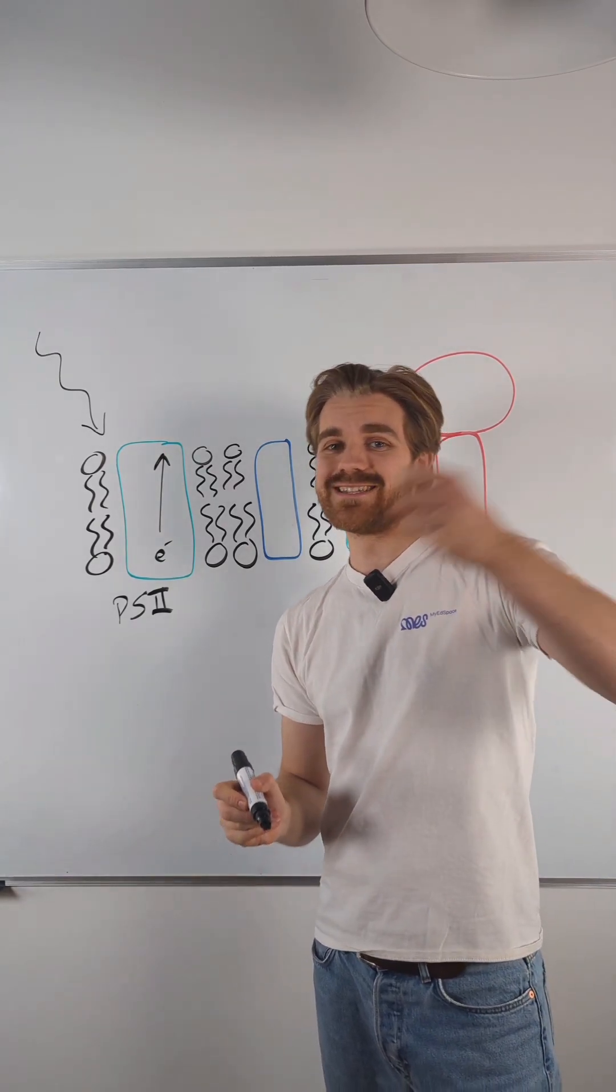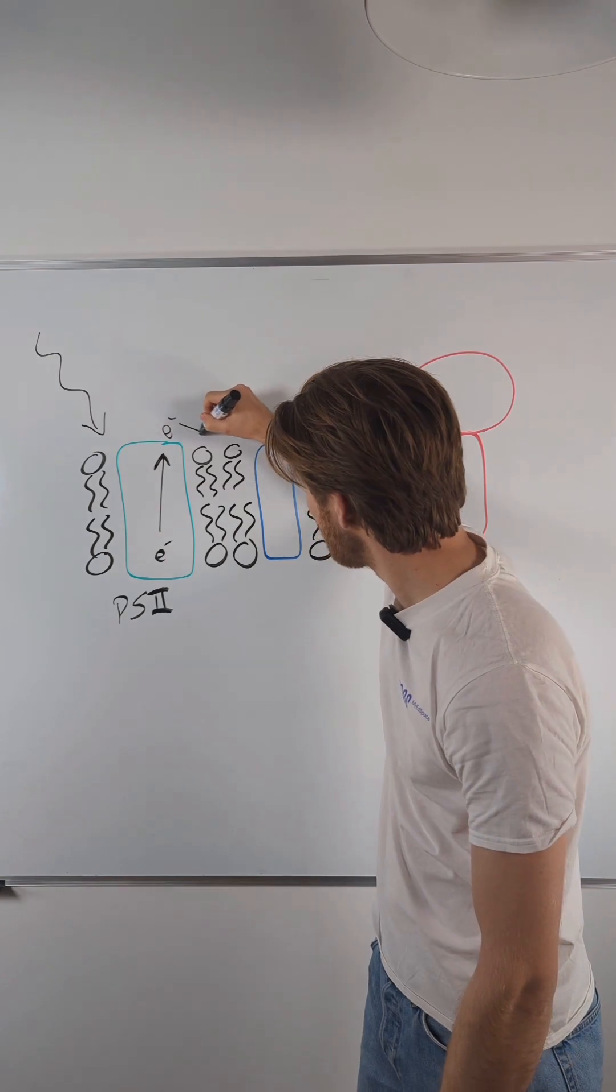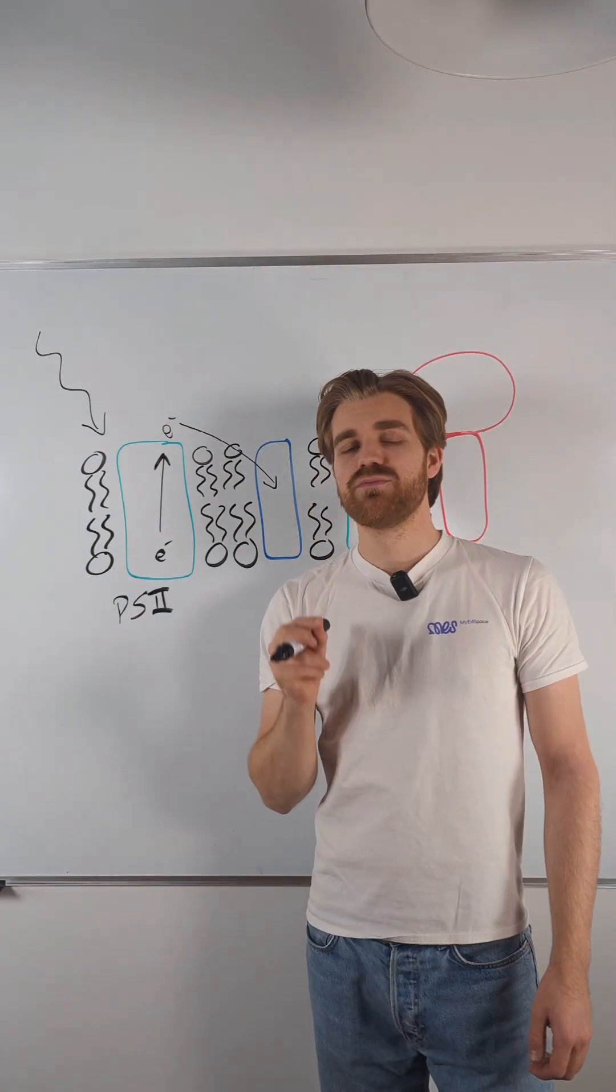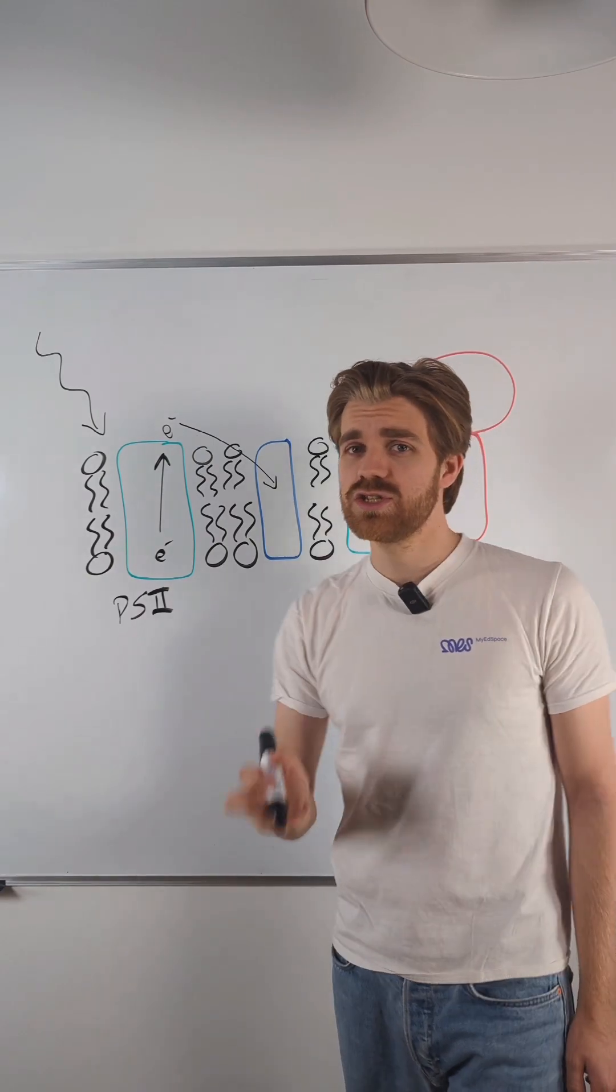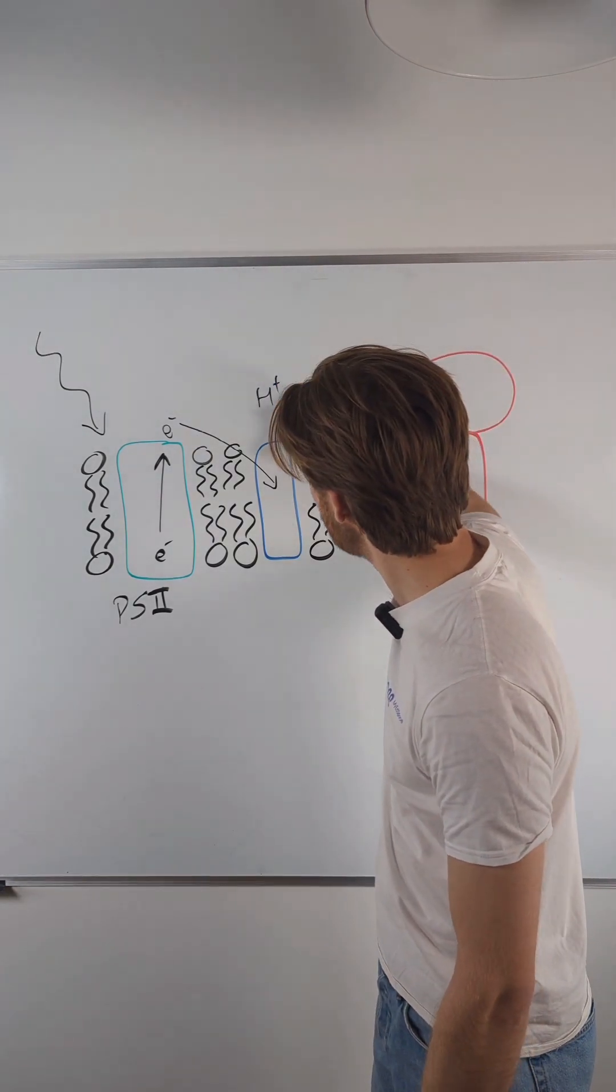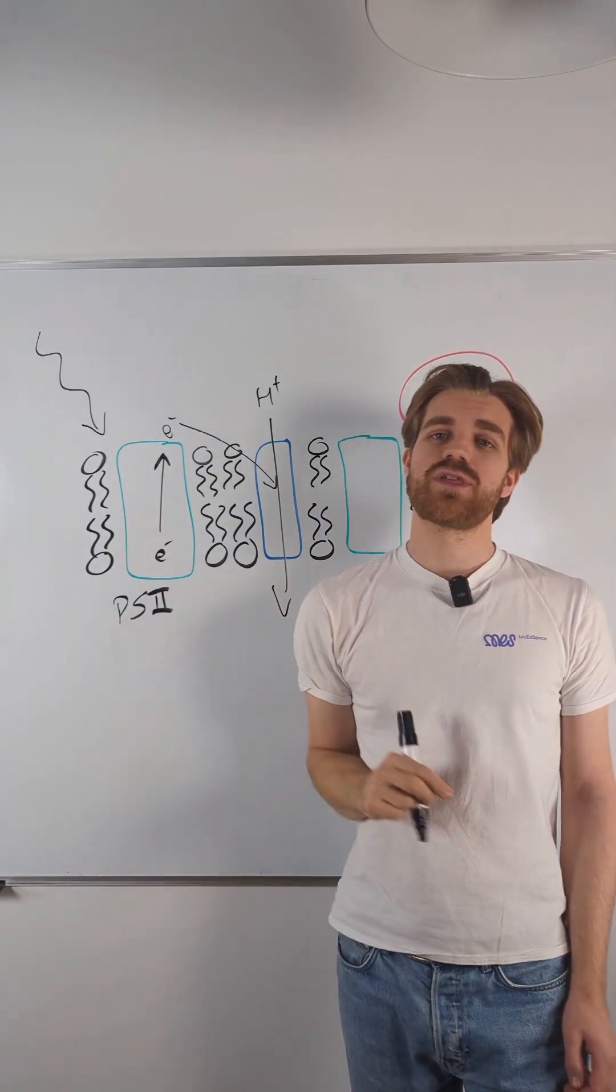That electron is now going to move down that energy level through the electron transport chain. As that electron moves down the electron transport chain it's going to lose energy and that energy is used to pump H plus ions from the stroma into the thylakoid lumen.